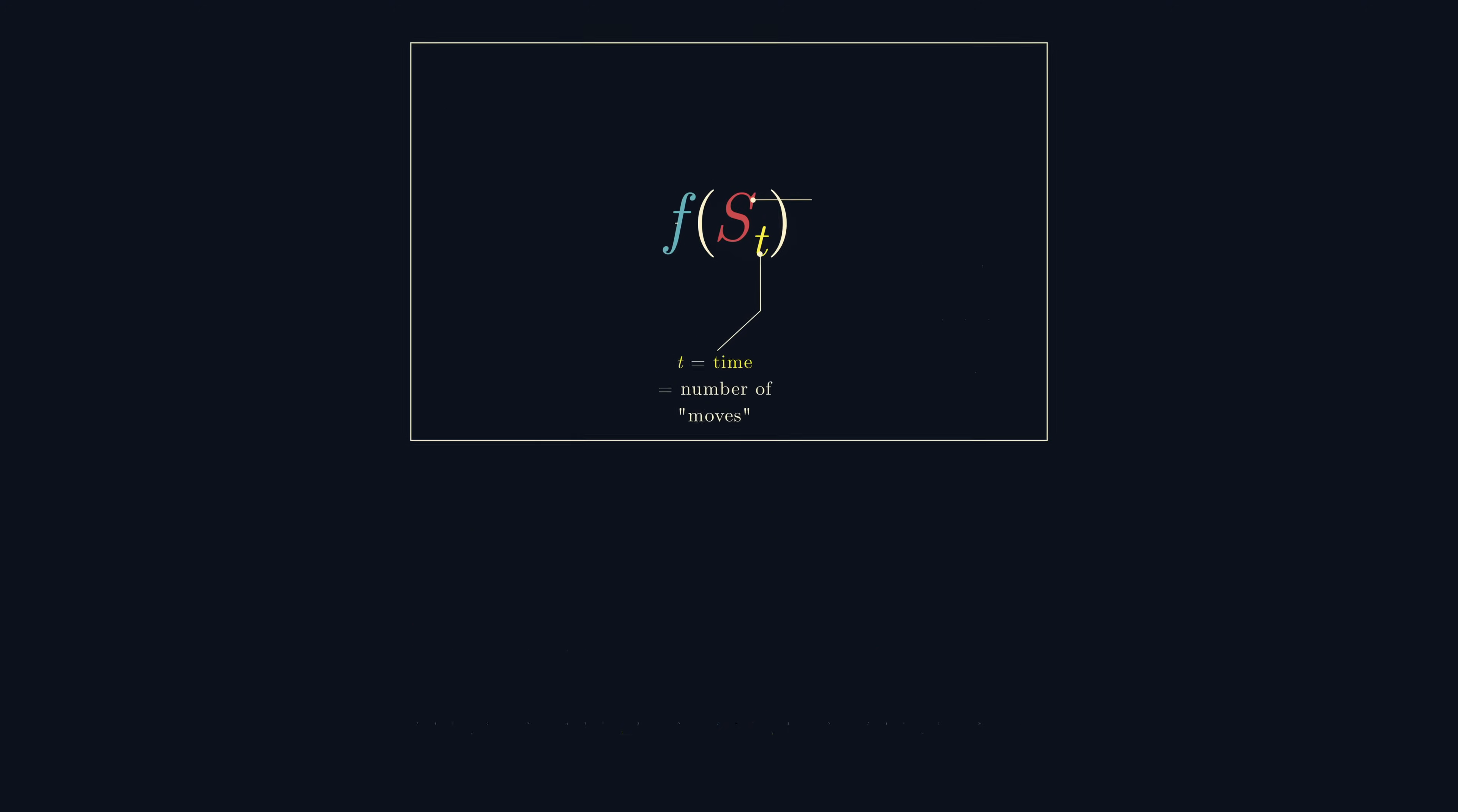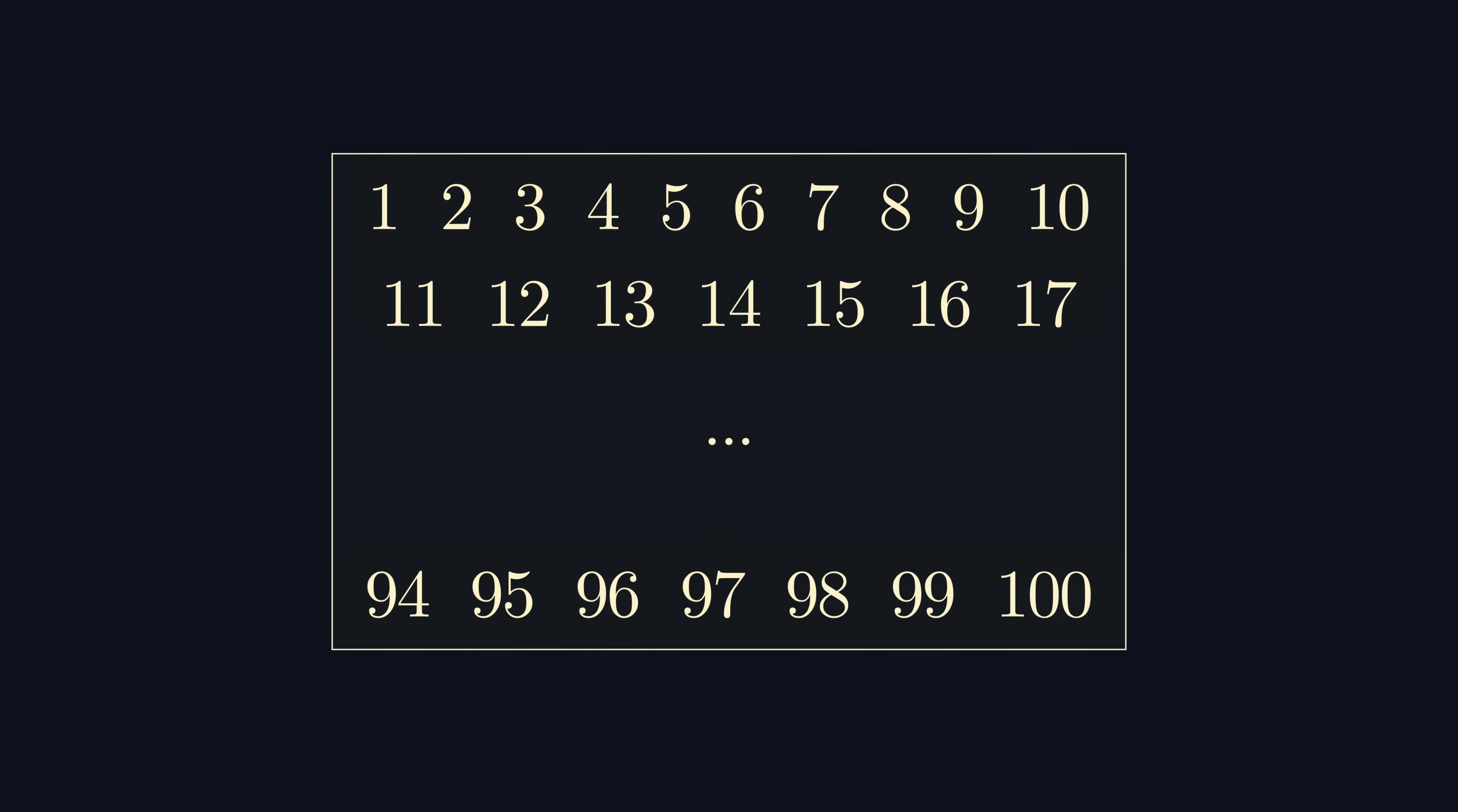A classic problem for demonstrating invariants is the following. If I write the numbers from 1 to 100 on a blackboard, and every minute I erase two of the numbers and replace them by their absolute difference.